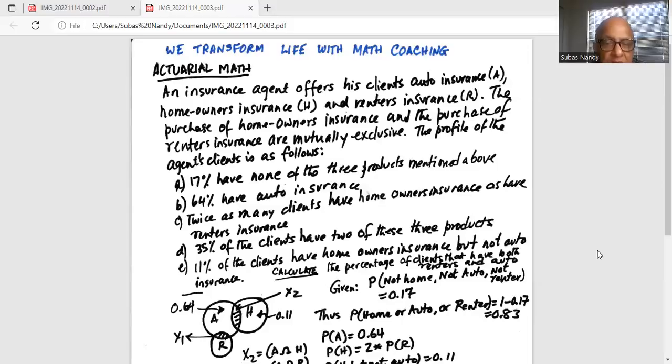Given the probability of not home, not auto, not renter is the complement of the other event, which is having a home or auto or renter. Probability of not home, not auto, not renter is given as 0.17. So probability of home or auto or renter is 1 minus 0.17 is 0.83.